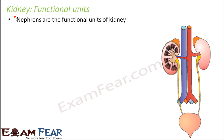Nephrons are the functional units of kidneys. Without nephrons, kidneys are nothing — kidneys will not be able to perform their basic function if nephrons are not there. One kidney is made up of millions of nephrons, and each nephron is producing urine. All these nephrons together collectively produce a lot of urine, and that urine is then said to be produced by the kidney.